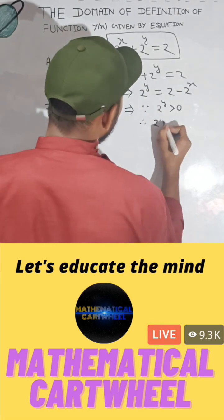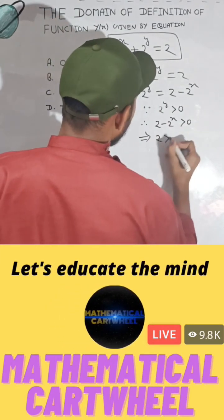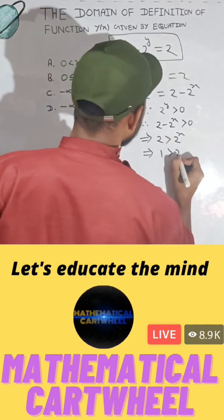So you can simply write here, therefore, 2 to power x will be always positive. And from here you can clearly write 2 will be greater than 2 to power x. So from here you can write that 1 is always greater than x.